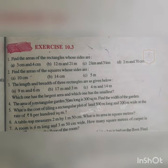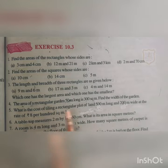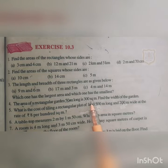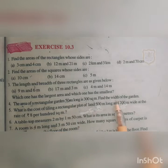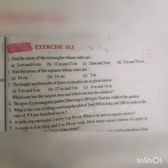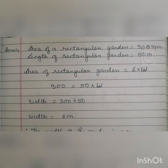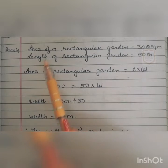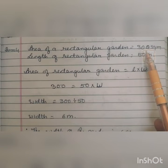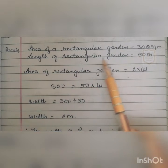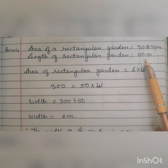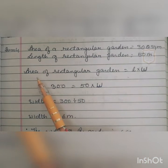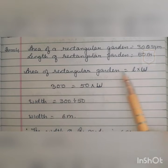Now we move on to question number 4. The area of a rectangular garden 50 meters long is 300 square meters. Find the width. What is given: the area of the garden is 300 square meters, and the length of the rectangular garden is 50 meters. We have to find out the breadth.